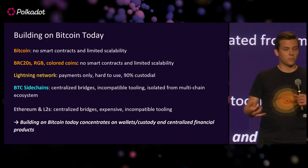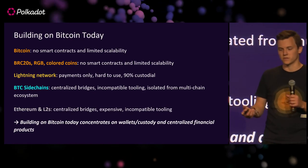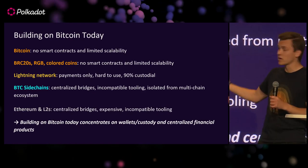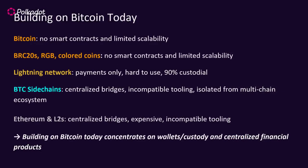If we take a look at building on Bitcoin to date, it becomes clear we're quite limited. Bitcoin does have a scripting language, but it doesn't have smart contracts. You can't do sophisticated things — you cannot build a DAO, you cannot do sophisticated lending markets. And you have limited scalability: Bitcoin does 7 to 10 transactions per second, and the moment you have some hype, it fills up.